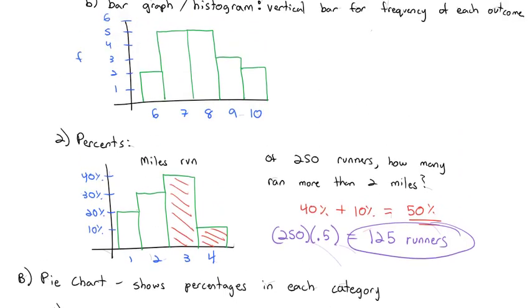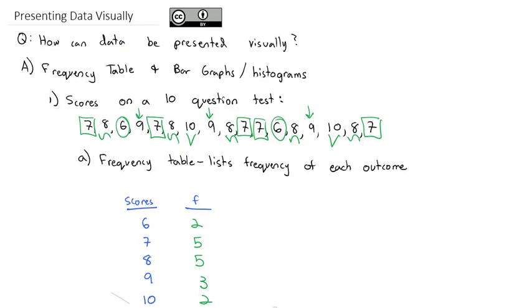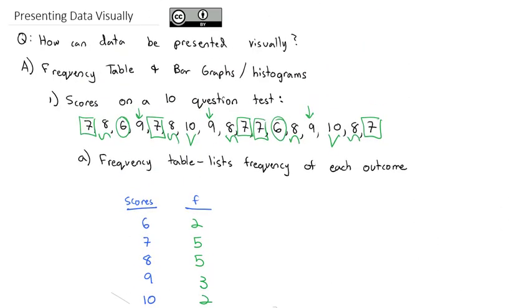So this was a short and quick introduction to graphs to represent data visually. It's probably the least mathematically rigorous of the different ways we can display data visually. But it's important we know how to interpret frequency tables, bar graphs, histograms, and pie charts. Take a look at the homework assignment to try a few of these. Let me know if you have any questions. In the next video, we'll take a look at a more numeric way to summarize and represent data.